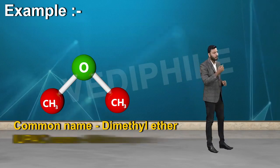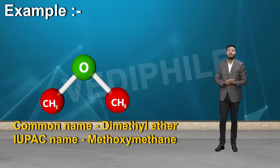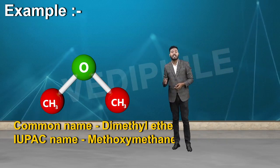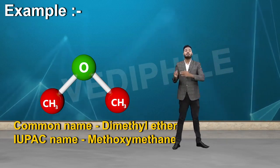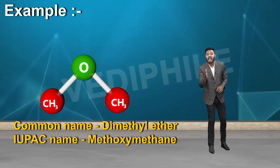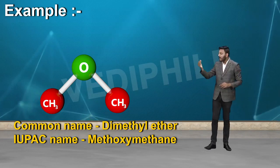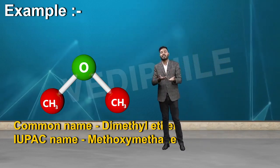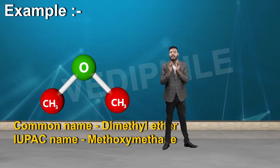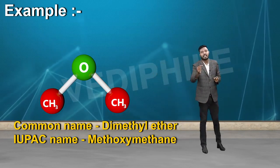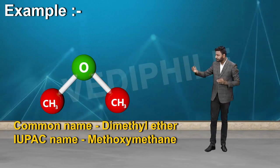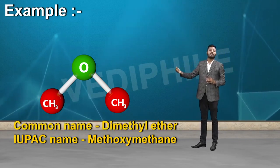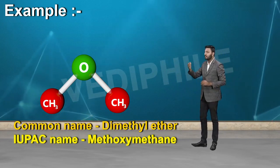The IUPAC name for CH3OCH3 is methoxymethane. The general pattern is alkoxy-alkane. So in common name it is dimethyl ether, and in IUPAC name it is methoxymethane.